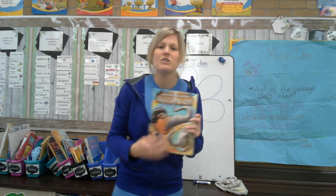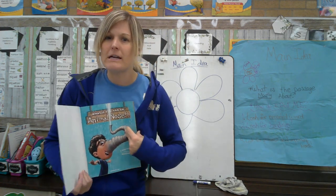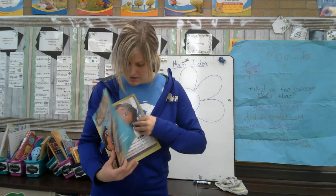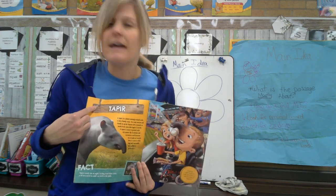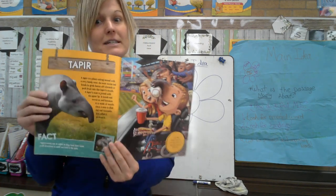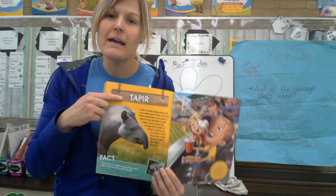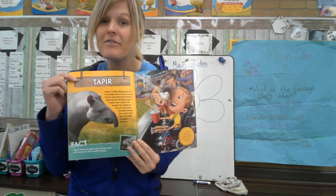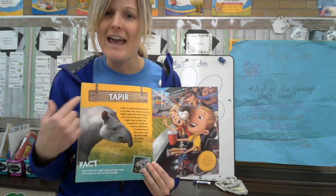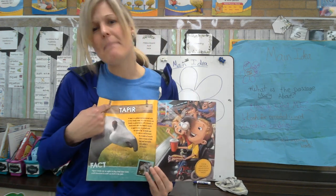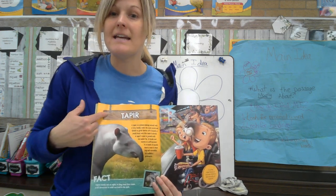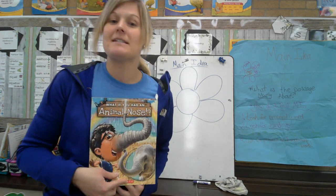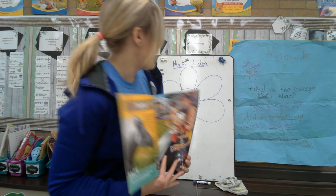Another thing you're going to want to look at is headings. Remember when you open up an informational text like this one, you're going to see at the beginning of sections there's a big bold word at the top of the page. This one on this page is 'tapir.' Now I have a feeling that when I look at the picture and the heading, I can say the main idea of this section is going to tell me about the tapir nose, because the book is What If You Had An Animal Nose. So look at the headings — those are going to help you a lot.